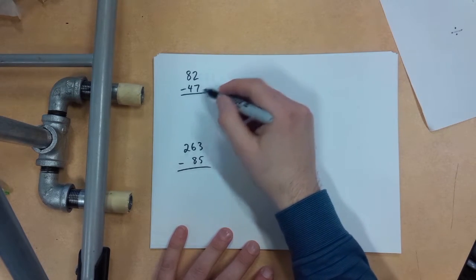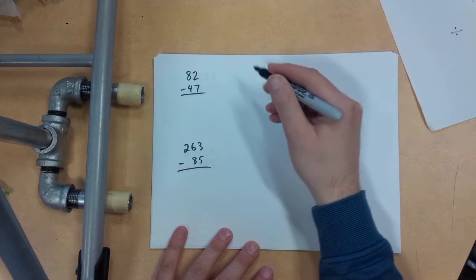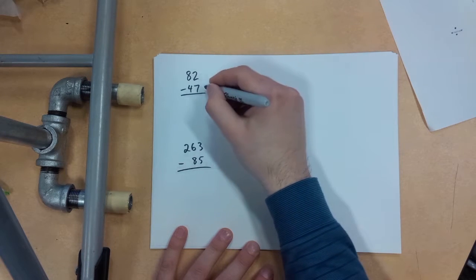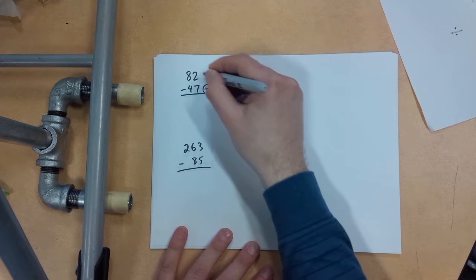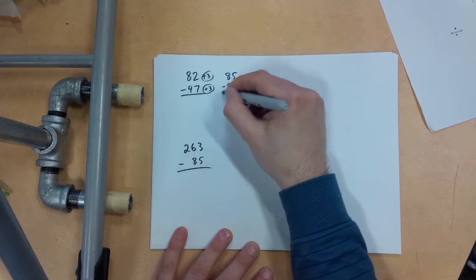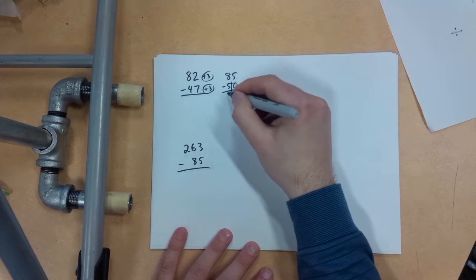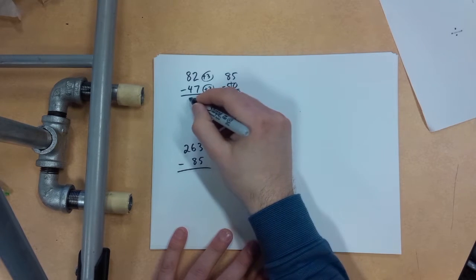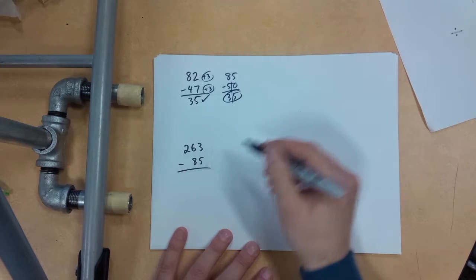What I'm going to try to do, instead of having to borrow and all that kind of stuff, I'm going to think, how can I bump this to an easier number? For example, if I bump both of these numbers up by 3, I get 85 minus 50. Now how much easier is that? That's simply 35. So that tells me that the answer here is 35.